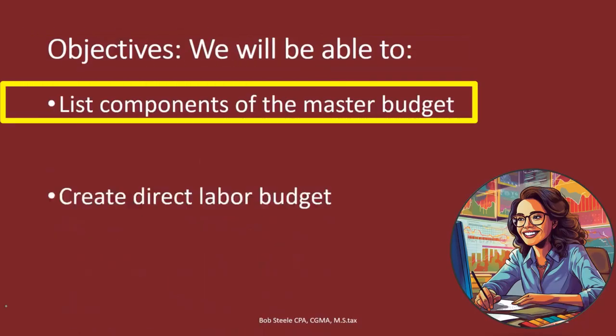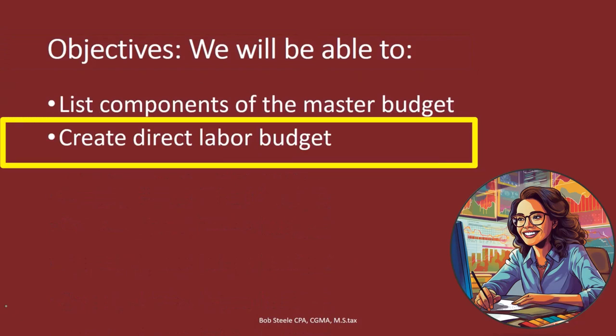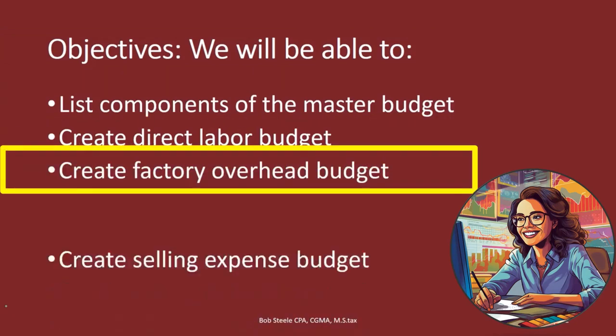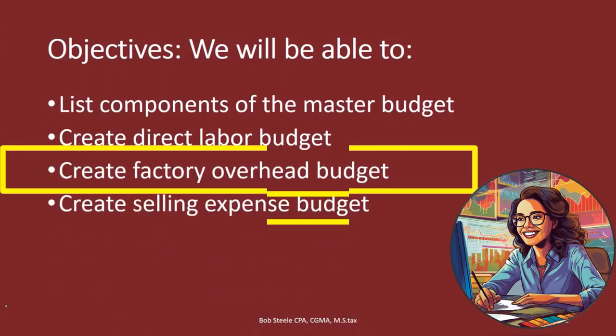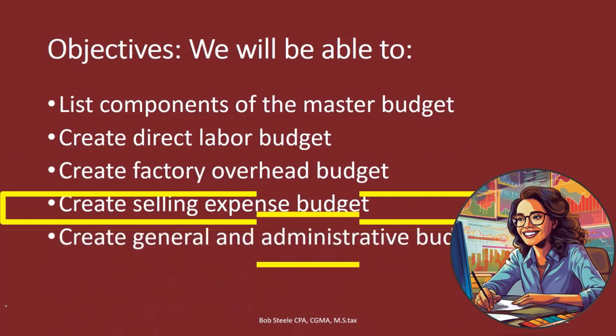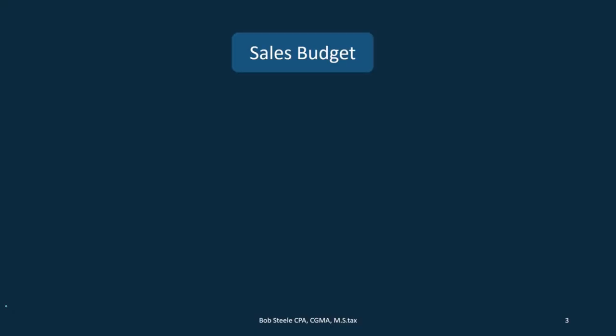Our learning objectives are to list the components of the master budget, create the direct labor budget, create the factory overhead budget, create the selling expense budget, and create the general and administrative budget.